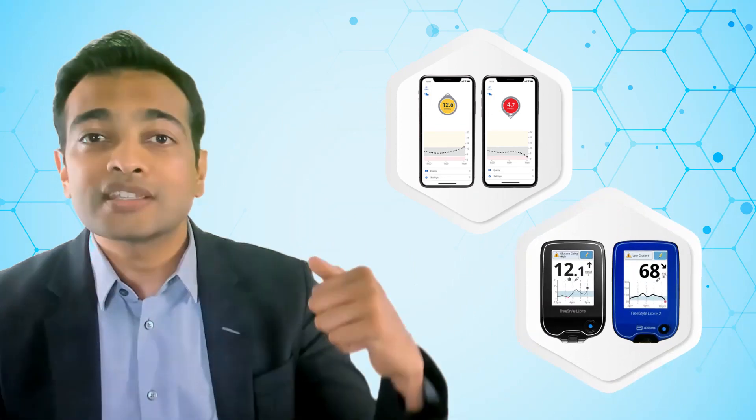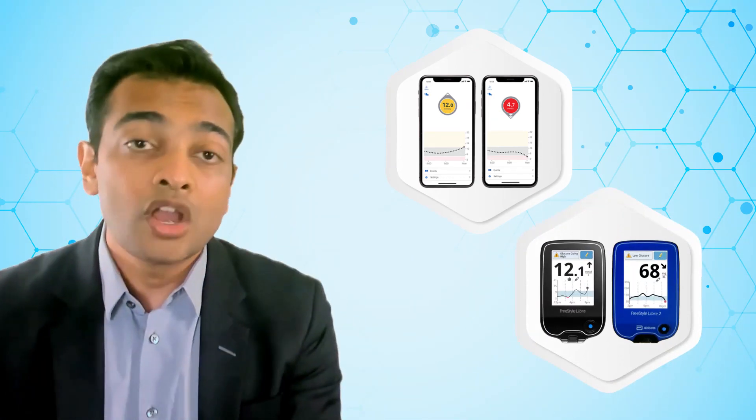Because these sensors are continuously checking sugar in the interstitial fluid, they are able to give a trend that helps understand the direction in which the blood glucose levels are heading. For instance, a CGM sensor showing a vertical arrow up or down suggests rapidly changing sugar readings, for which you may need to take action.